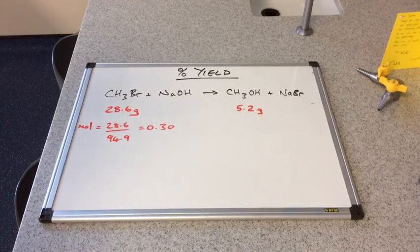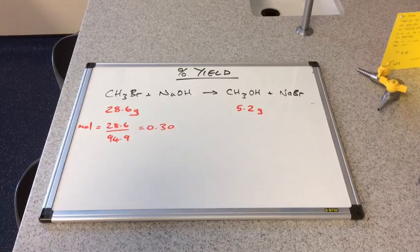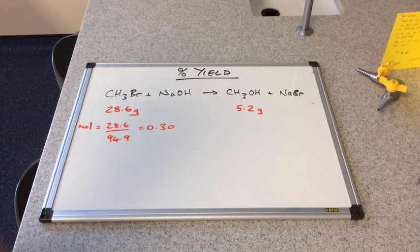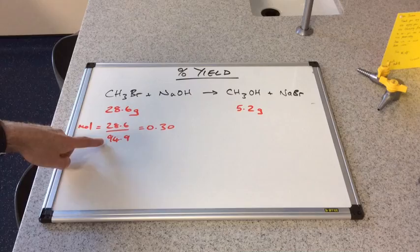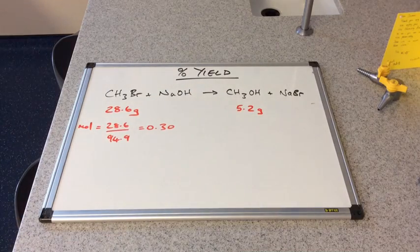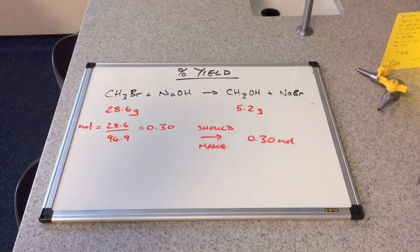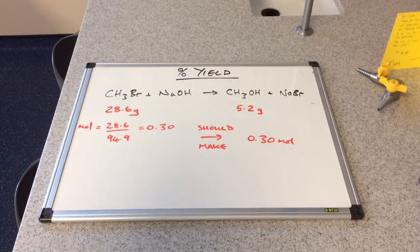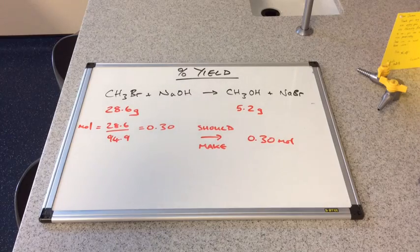Remember, the first step was to calculate the moles of the substance that we start out with. We divide the mass by the MR, so the moles of bromomethane that we started with was 0.30. Because of the 1 to 1 mole ratio in this equation, that means we should make 0.30 moles of methanol.